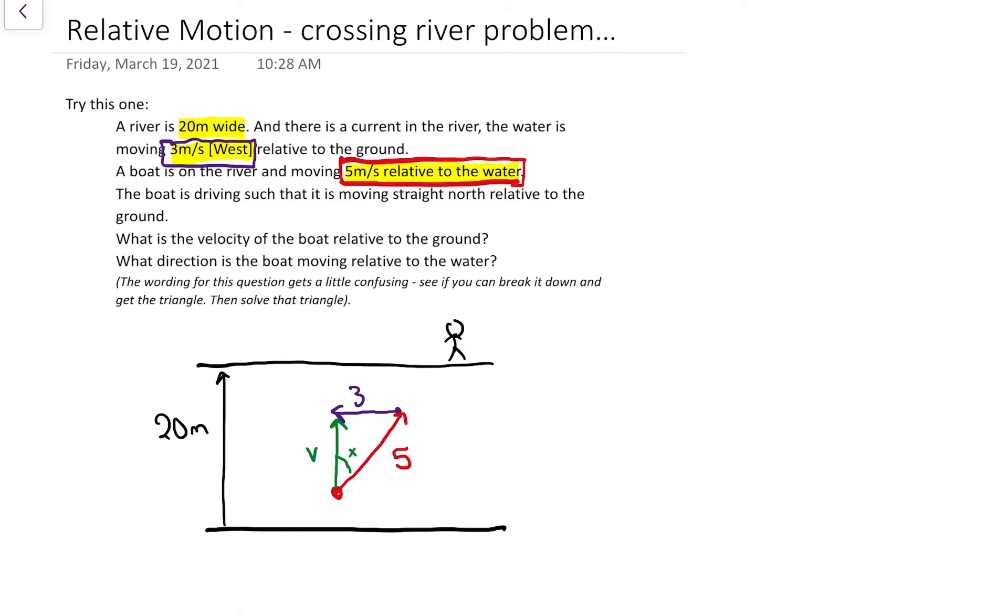So if we think about the subscript equation, the velocity of the boat relative to the ground is the velocity of the boat relative to the water plus the velocity of the water relative to the ground. If you're okay with the subscript notation, what's different about this particular question is, I know that this has to be north, but I don't know how fast. So I'm missing the number to go with that.